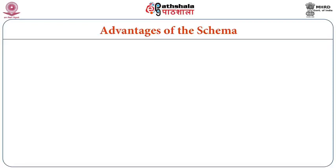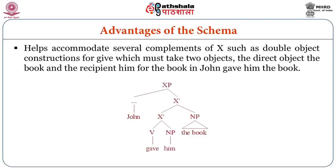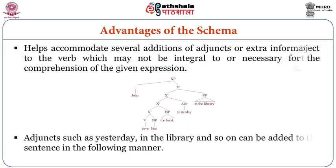What are the advantages of the schema? It helps accommodate several complements of X, such as double object constructions for the verb 'give', which must take two objects — the direct object 'the book' and the recipient 'him', as in 'John gave him the book'. See this tree diagram to understand it in a better way. It also helps accommodate several additions of adjuncts, or extra information, to the verb which may not be integral to or necessary for the comprehension of the given expression, as is evident from the tree on your screen.